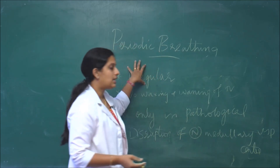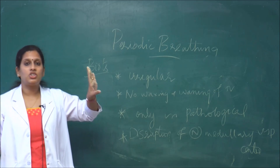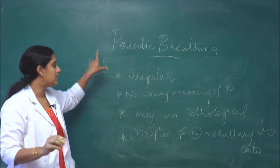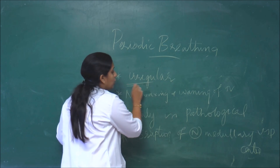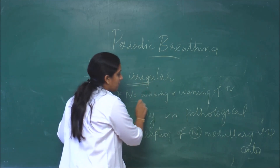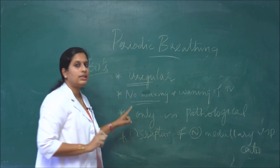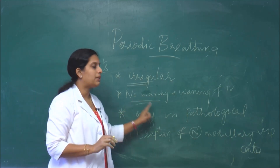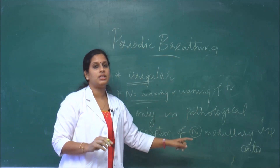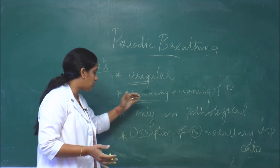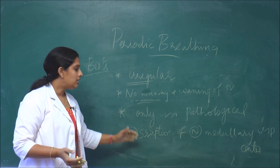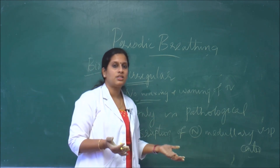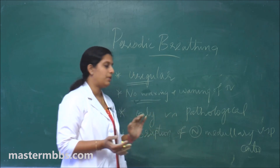Biot's breathing is a type of periodic breathing in which the alternate period of respiratory activity and apnea occurs at irregular intervals. There is no waxing and waning of tidal volume, and it is only seen in pathological conditions like head injury and meningitis. This indicates a disruption of the normal medullary center of respiration.